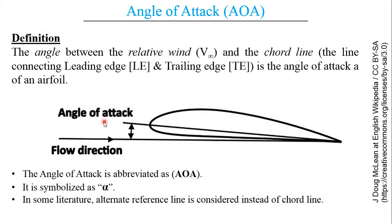Finding an angle of attack: angle of attack is nothing but the angle between the relative wind and the chord line. The chord line is a line which joins the leading edge and the trailing edge of an airfoil. Relative wind is the wind which is relative to the airfoil or the aircraft. The angle of attack is abbreviated as AOA and is also represented with the symbol alpha, and both are commonly used in literature.